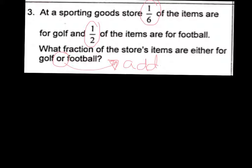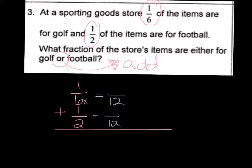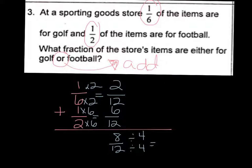Or means add. Always, always, always. So we're going to add one-sixth plus one-half. Finding our common denominator, which we could use six or twelve. We'll go with twelve. This would be times two to give you two-twelfths. This would be times six to give you six-twelfths. Add your numerator. Six plus two is eight-twelfths. And then simplify by a number that goes into both, which would be four. So eight divided by four is two. And twelve divided by four is three. So your final answer is two-thirds of the store's items are for golf or football.